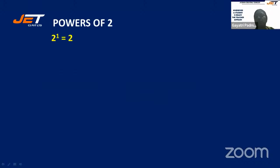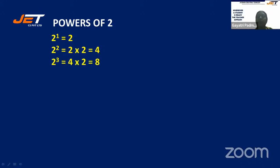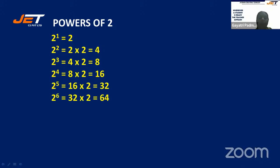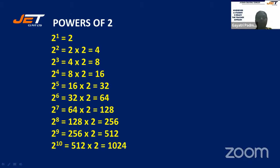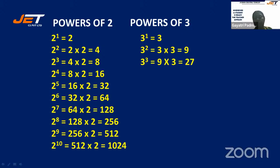Now let us see powers of 2. Anything to the power 0 is 1, and to the power 1 is the same number. So 2 power 1 is 2, 2 power 2 is 4, 2 power 3 is 8, 2 power 4 is 16, 2 power 5 is 32, 2 power 6 is 64, 2 power 7 is 128, 2 power 8 is 256, 2 power 9 is 512, 2 power 10 is 1024.